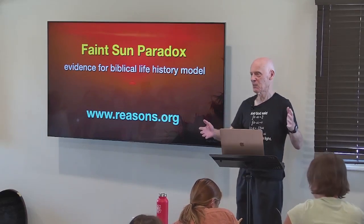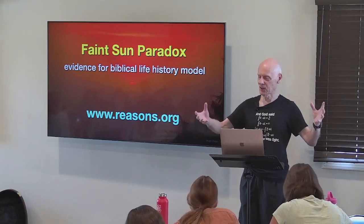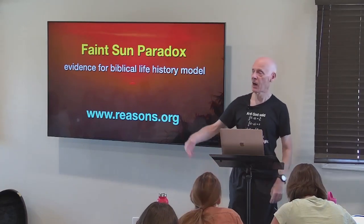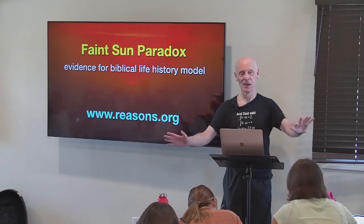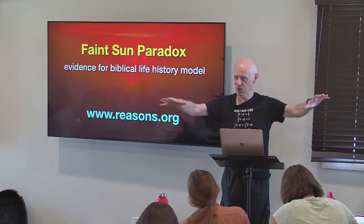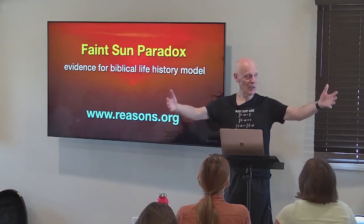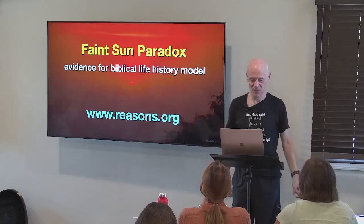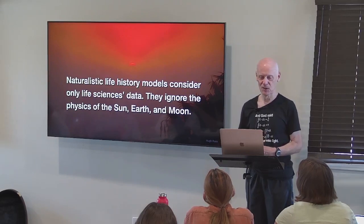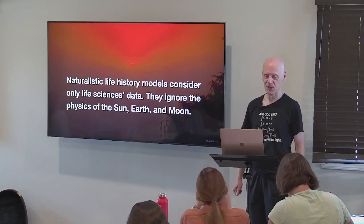The faint sun paradox is: how do we explain the long history of life on planet earth given that the sun today is much brighter than it was at the time of the origin of life? Naturalistic life history models consider only life science data — genetics and the fossil record — and ignore the changing physics of the sun, earth, and moon. Interestingly, in debates, evolutionary biologists say they want to pass on the origin of life — they have no answer for it. But if there's no answer for the origin of life, there's no answer for the history of life either.